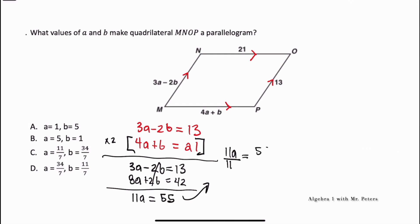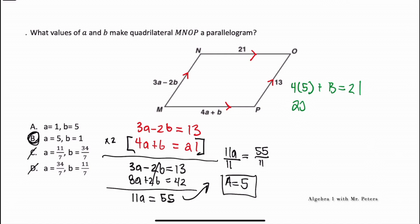Dividing by 11, we know A = 5. Looking at our answer choices, C, D, and A are eliminated, so the correct answer is B. To verify, we plug back into the second equation: 4(5) + B = 21, so 20 + B = 21, giving us B = 1. This confirms we have the correct values for A and B.